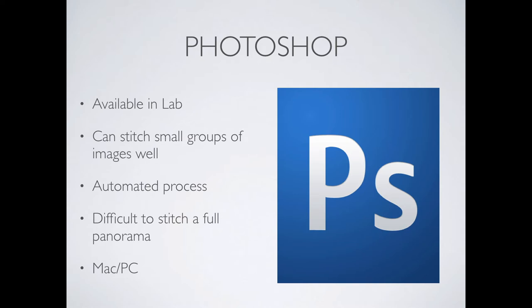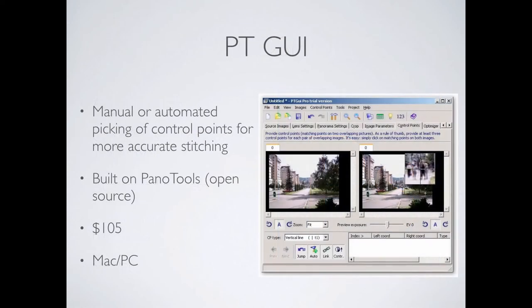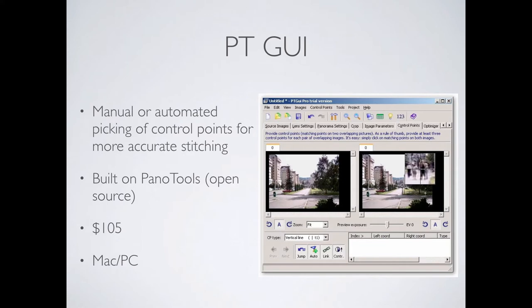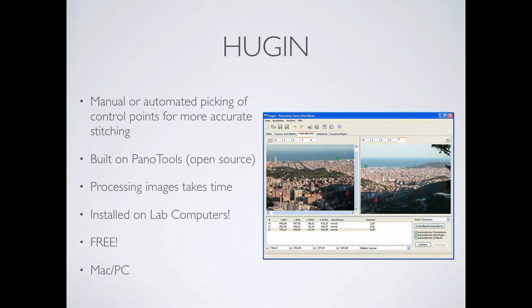It is an automated process — it's actually really, really easy — and it will do the alignment for the most part for you. It is very important that if you're going to take lots of pictures, they overlap. Photoshop needs overlap in the pictures for them to align up. There are two other pieces of software: PTGUI, which is paid, and Hugin, which is free. PTGUI is a little faster but they're very similar. I used to have Hugin installed on the lab machines. It's open source, so if you're really into panoramas you can download it yourself.